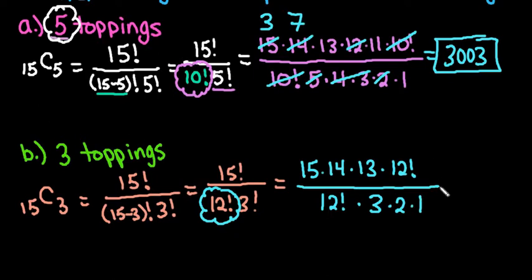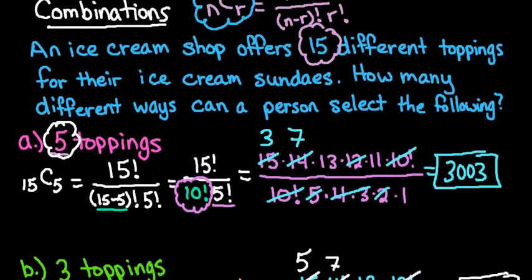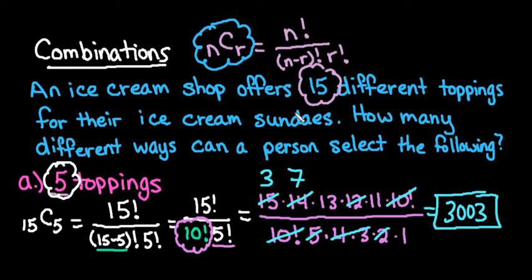Now we can go through and simplify. The 12 factorials cancel out. 15 divided by 3 gives me 5, and 14 divided by 2 gives me 7. You can always multiply first and then divide, but to me it's easier just to get to smaller numbers. We would just multiply 5 times 7 times 13, which ends up giving us 455.